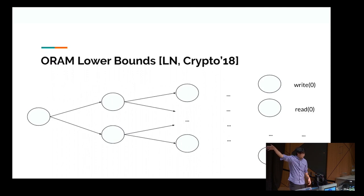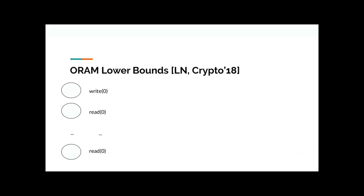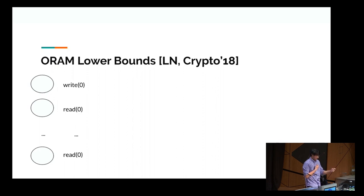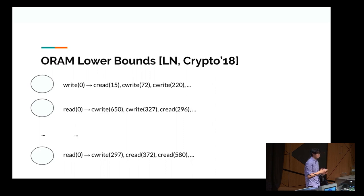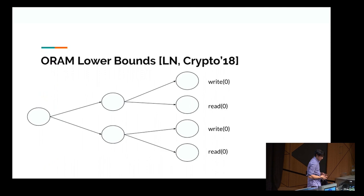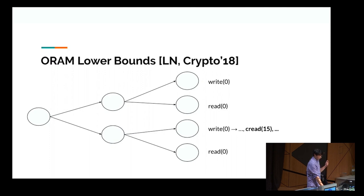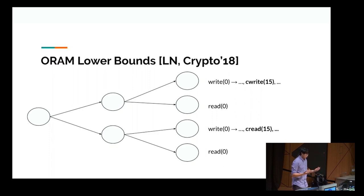We've taken N operations and assigned them uniquely to each leaf. Each operation — writing to the zeroth index, reading from the zeroth index — is actually implemented by cell reads and cell writes, these probes. For example, the first operation, writing a random block to the zeroth index, might be implemented by reading cell 15, writing to cell 72, writing to cell 220, et cetera. What we're going to do is construct this information transfer tree. For any cell probe that's a read — say reading cell 15 — you find the most recent write to cell 15, and assign this cell probe to the lowest common ancestor of those two operations.